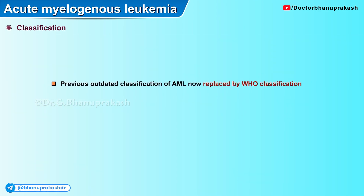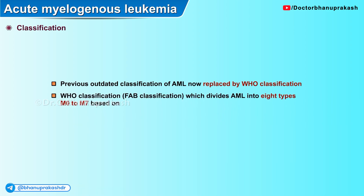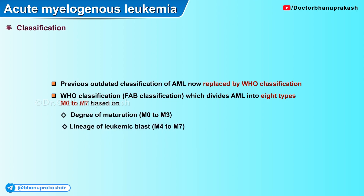The previous FAB classification of AML has now been replaced by the WHO classification. The FAB system divides AML into eight subtypes M0 through M7, based on the degree of maturation from M0 to M3, and also based on the lineage of the leukemia from M4 through M7.